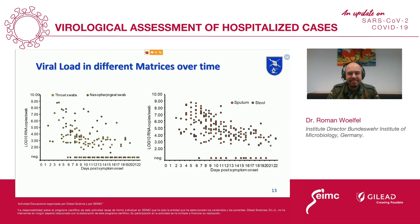You see here the viral load in different matrices. The viral load in the throat swabs and nasopharyngeal swabs is very high, especially in the first days — going up to 10 to the 9th per swab and decreasing over time. On the right part of the graph, you see the viral load for sputum and stool samples, which is also quite high, especially during the first days. Keep in mind that this is just detection of viral RNA, not detection of infectious virus.